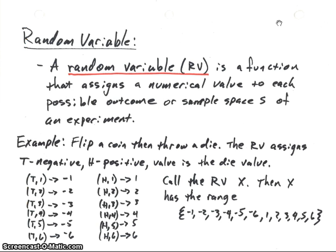Let's take a look at a quick example. Suppose we want to flip a coin and then throw a die. Let's say that our random variable will assign values such that if a tail appears, we'll give it a negative number; if heads appears, we'll give it a positive number. The number assigned will be whatever value appears on the die. I've got listed here all the possible outcomes of that experiment.